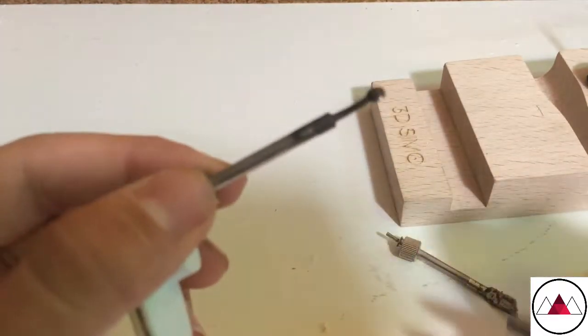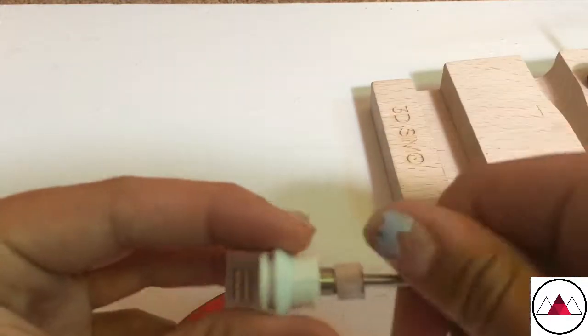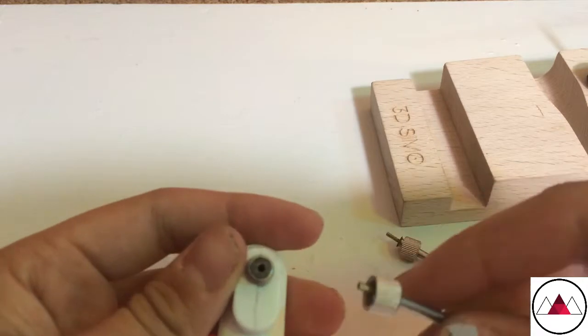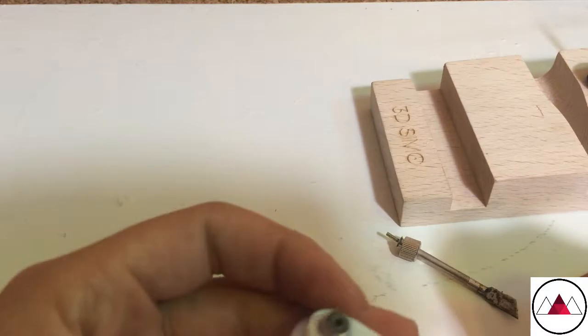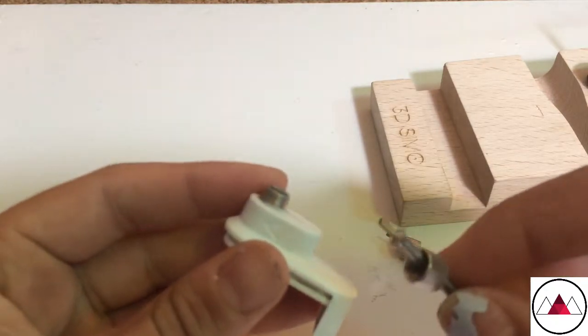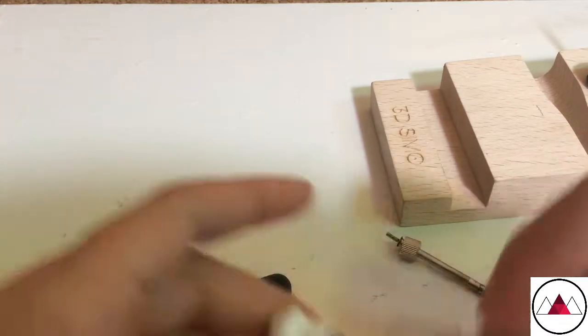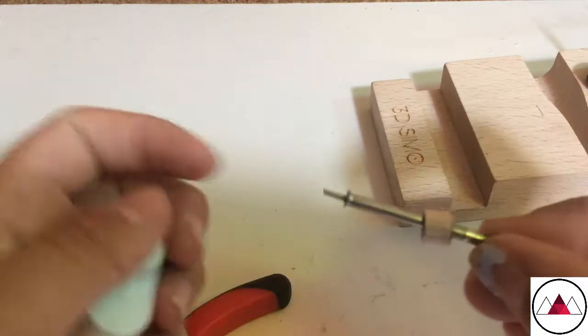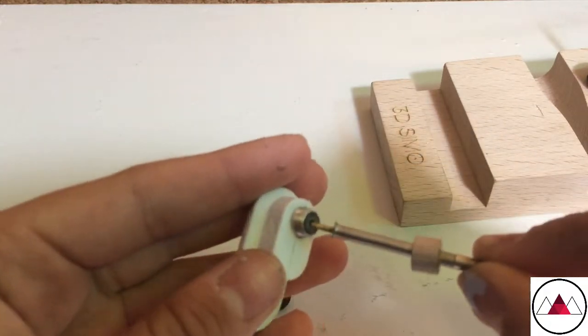And then once you get this part off, you want to take your pliers and hold on to this barrel part. Just be careful not to squeeze too hard or else you can dent that barrel part right there. Once you get it, then you can start twisting with your fingers. It might look like it's not right, but that part stays in there.